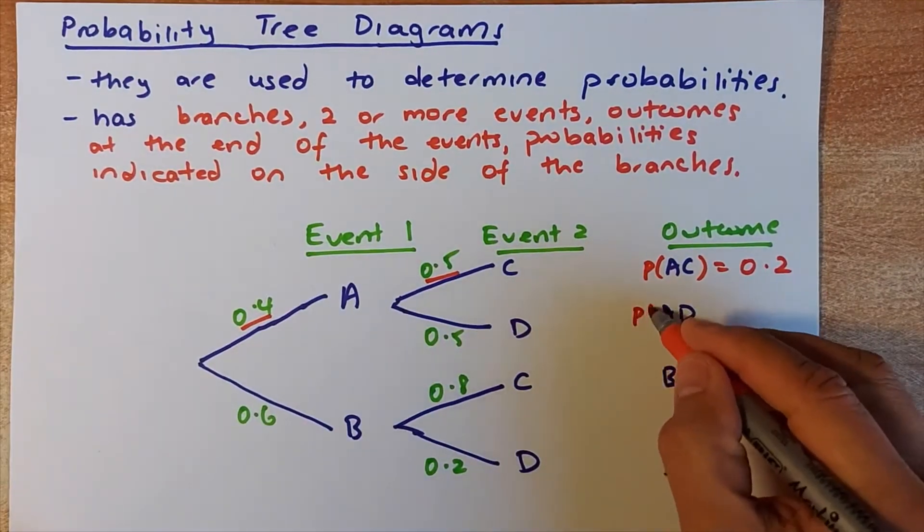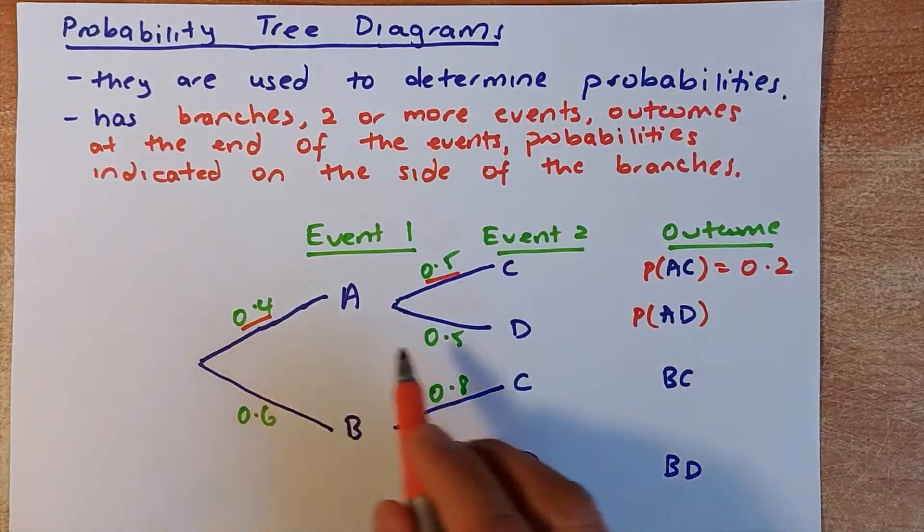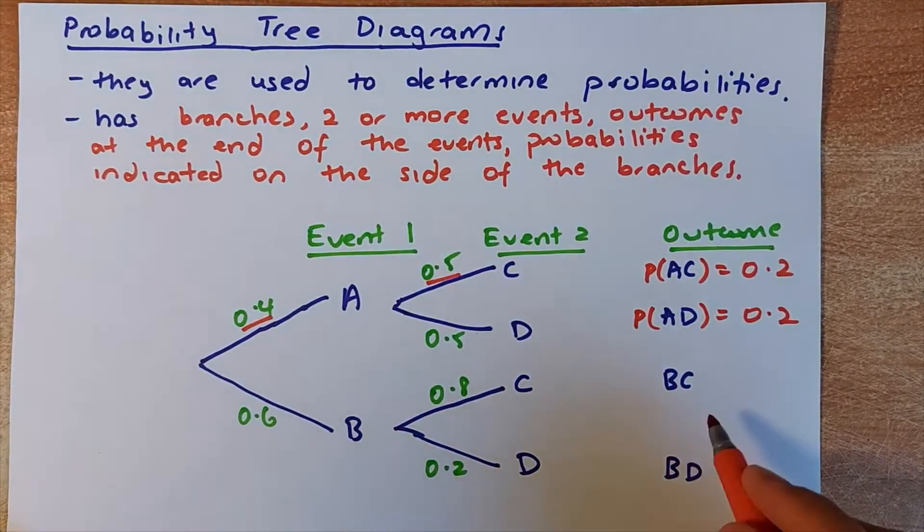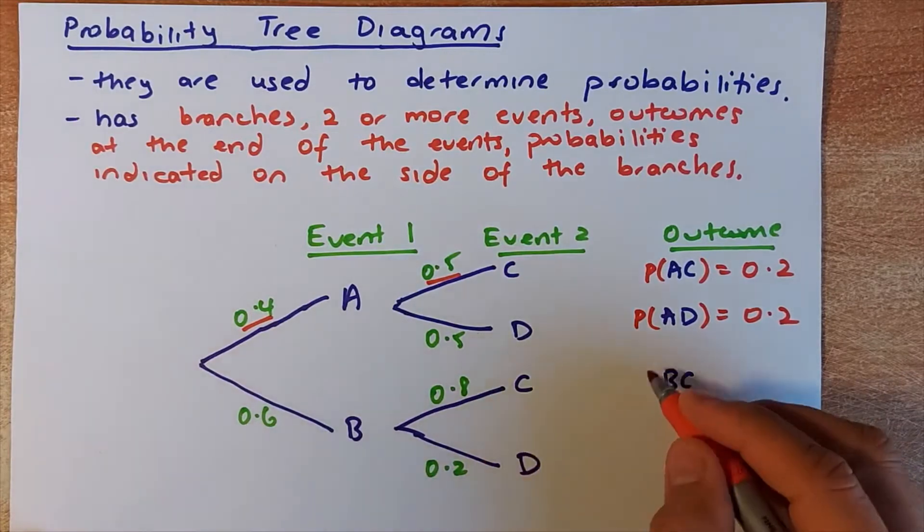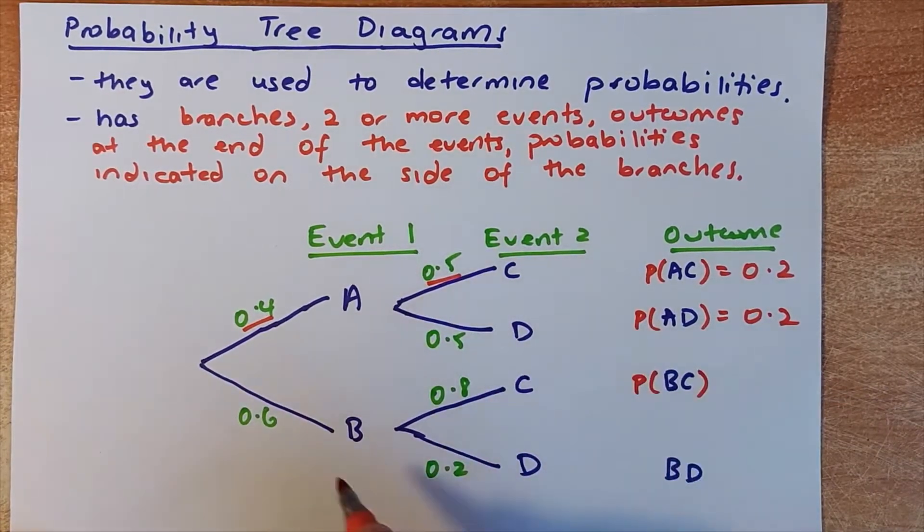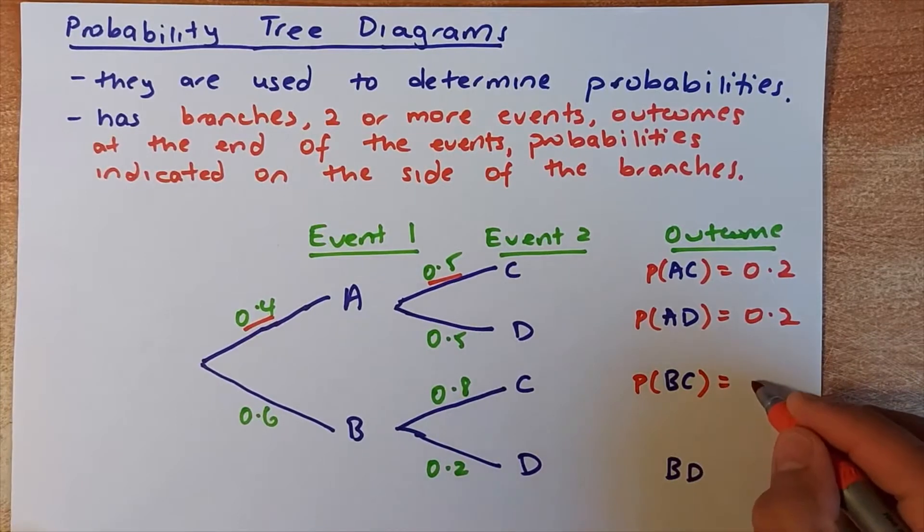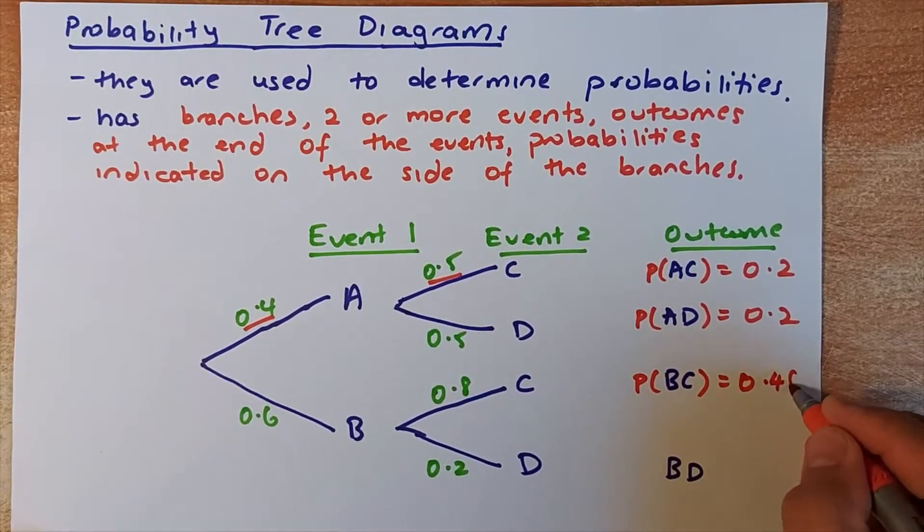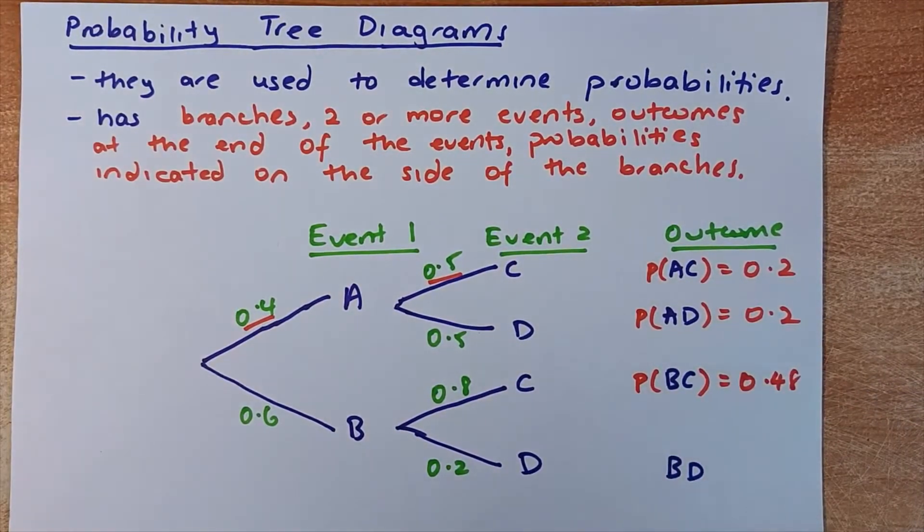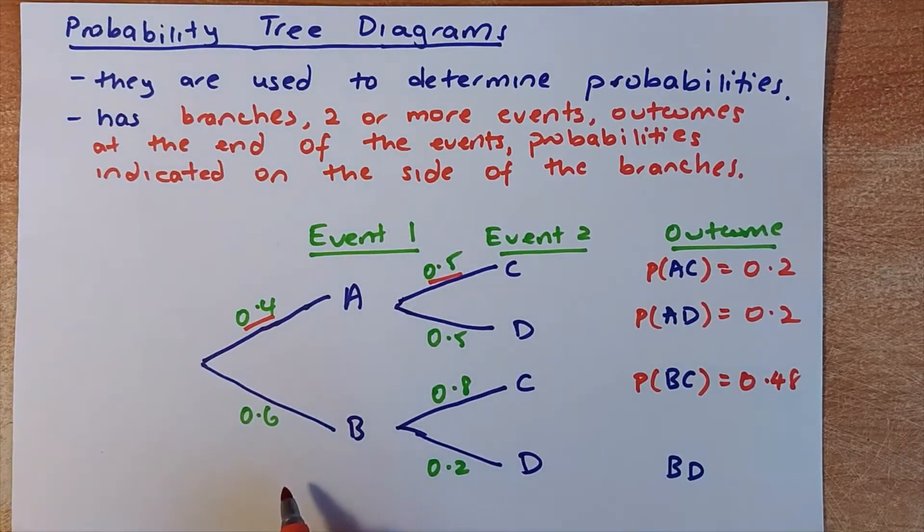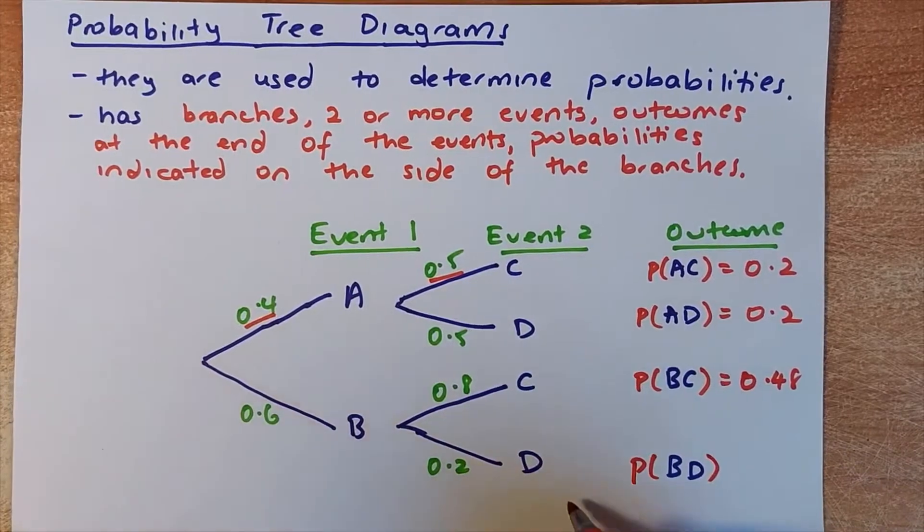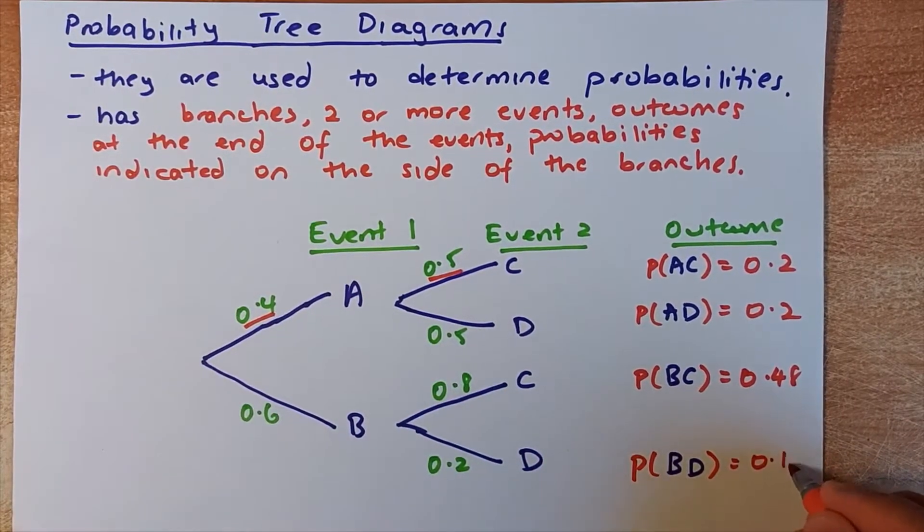Similarly, you want to get probability of AD, you multiply 0.4 times 0.5, again it is 0.2. To get BC, the probability of BC, you multiply 0.6 times 0.8. Use the calculator, it is 0.48. And the last one, 0.6 times 0.2. To get the probability of BD, you multiply them is 0.12.